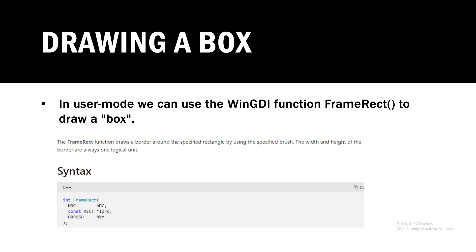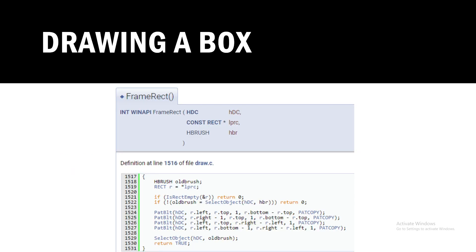We can't exactly call FrameRect from our kernel driver, so we're going to look at what this function actually does. This is from ReactOS - all this function does is select the brush you want to use to draw and then it calls PatBlt to draw the rectangle. The first thing it does is save the current brush before drawing, and once it's done it sets it back to the old brush.